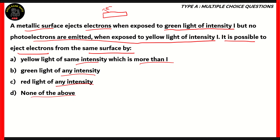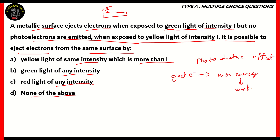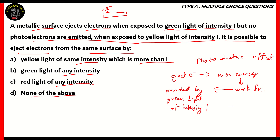When it comes to the photoelectric effect, in order to eject electrons we need a minimum energy, which is called the work function. This work function is basically the minimum energy required to eject an electron from a metal. According to our question, this work function is provided by green light of intensity I. Now we need to find whether another light source can provide the same work function to eject electrons.